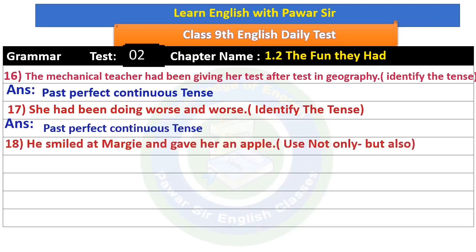'He smiled at Margie and gave her an apple.' Rewrite using 'not only...but also.' Vidyarthi Mitra, 'not only...but also' joins two verbs or nouns or adjectives that are parallel. Here both 'smiled' and 'gave' are verbs — both actions are being joined. So the answer is: 'He not only smiled at Margie but also gave her an apple.'